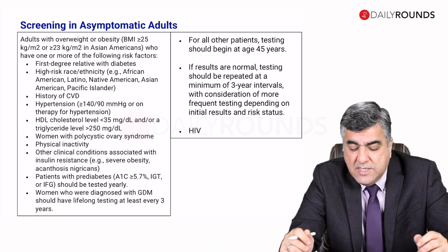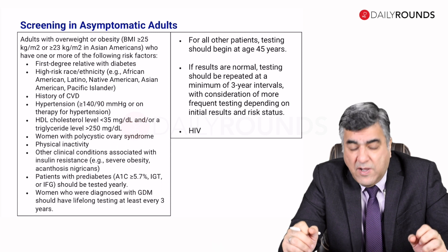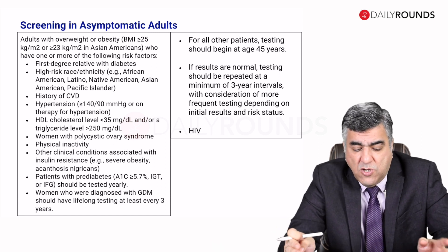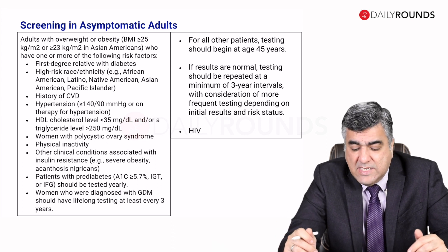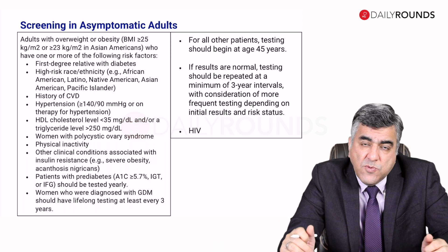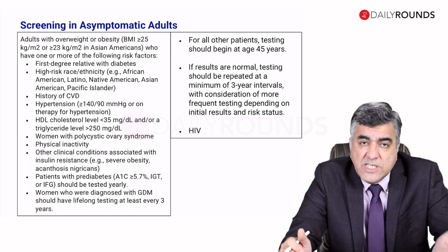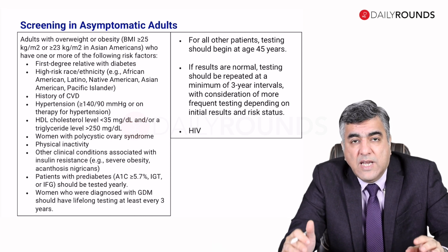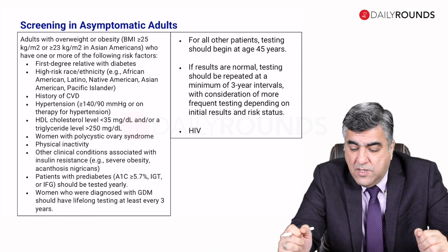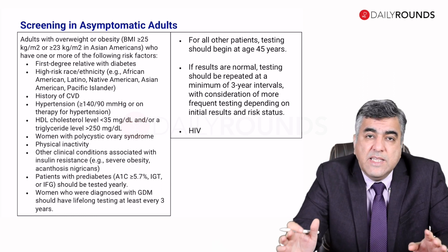Patients with prediabetes — those whose A1C is more than 5.7 percent or who already have impaired glucose tolerance or IFG — should be tested yearly to see whether they are normalizing or progressing towards diabetes. Women diagnosed with gestational diabetes should have lifelong testing at every three years. For all other patients, testing should begin at the age of 45 years.